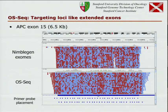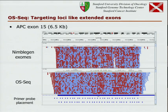On a much bigger exon, such as APC exon 15, in standard exome capture you get plenty of data but sometimes depth drops, even to regions where it drops almost to zero. While in our OS-Seq method, the depth never drops under 100. Of course, we have to put plenty of capture probes because this exon is so big.